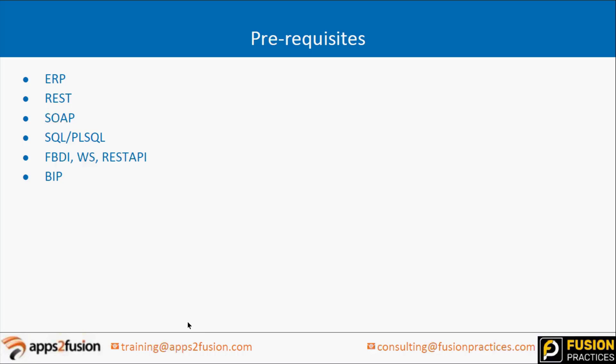In simple terms, what do we do in integrations? We have two systems. Let's take any two systems - a company called A and another called B. B is on Fusion, A is on SAP, but these two do business with each other. Every day there are transactions happening and they both need to interact. Since both are on cloud, you need a separate system to integrate them. Let's take OIC as our integration tool.